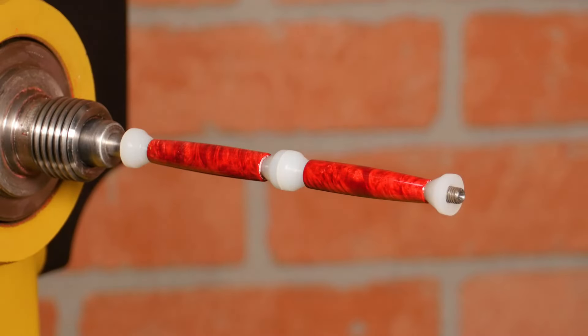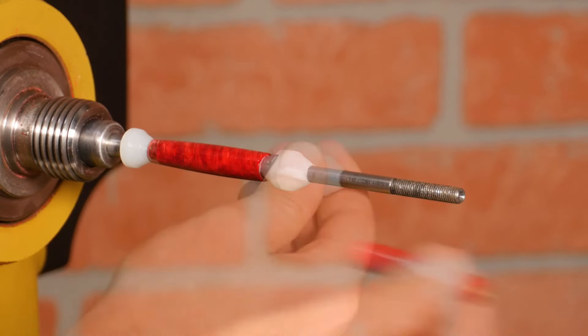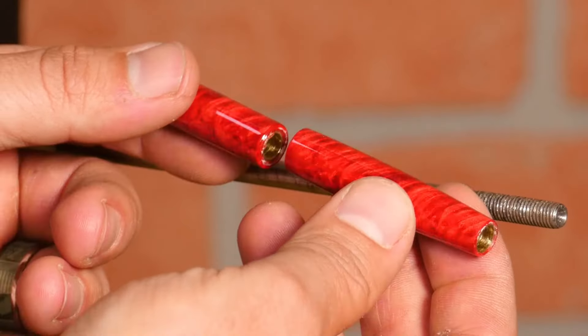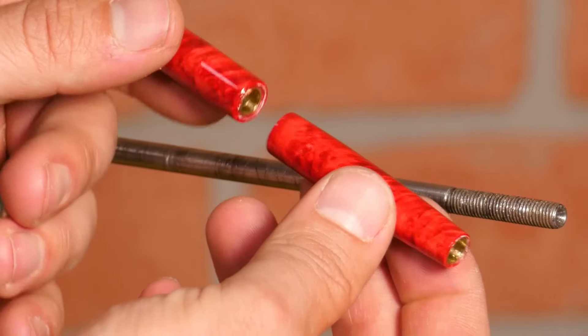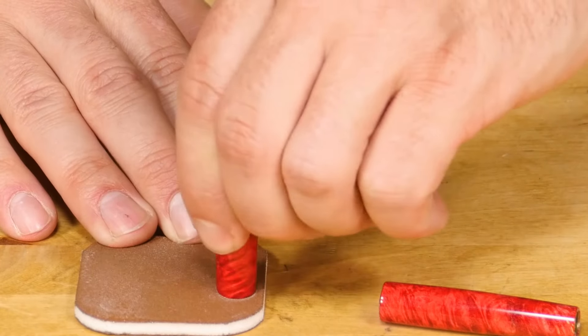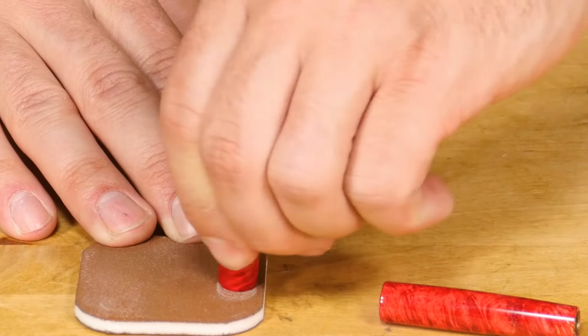After polishing, remove the pen blanks from the mandrel and remember their proper order for grain alignment. The ends will likely have a small amount of CA glue on the end that can be removed by hand using some 1500 grit sandpaper.